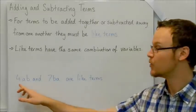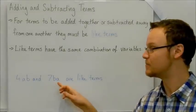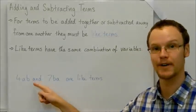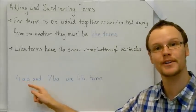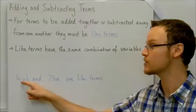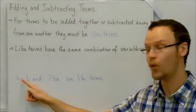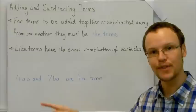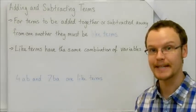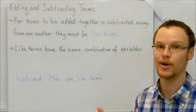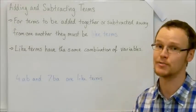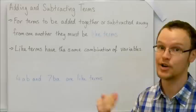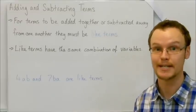So for example here, 4ab and 7ba are like terms. They are like terms because they have the same combination of variables. They're not in the same order, a and b are switched around. But this means 4 times a times b, and this means 7 times b times a. If you think about it, a times b is the same as b times a. They can be switched around. Very much like 2 times 3 is equal to 6, 3 times 2 is also equal to 6.